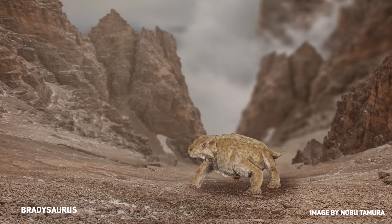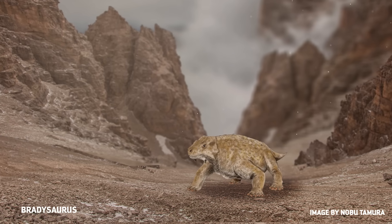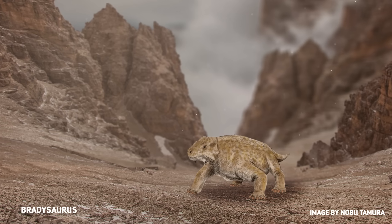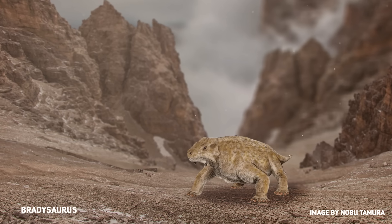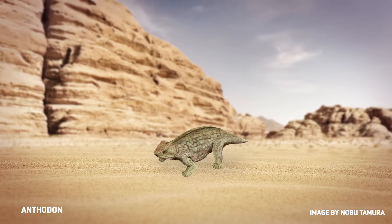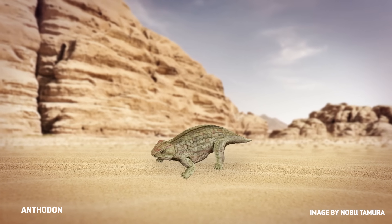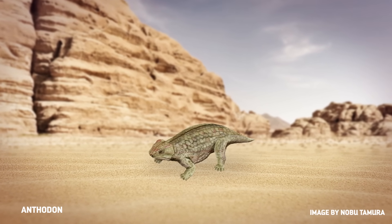It suggested that turtles were related to a particular group of extinct parareptiles called the pareiasaurs. These are sometimes called the ugliest reptiles, but we don't judge here. Bradysaurus, for example, lived around 260 million years ago in the Permian period, and it was covered in a layer of hardened scutes. Likewise, a later pareiasaur called Anthodon had more developed bony plates that formed a layer of armor a lot like a turtle's shell.